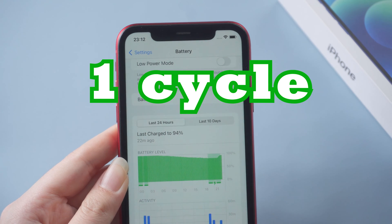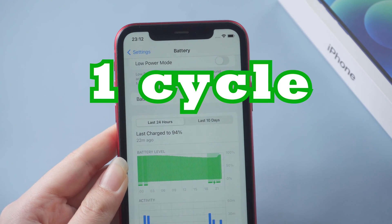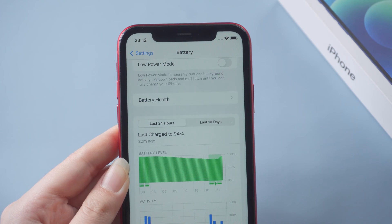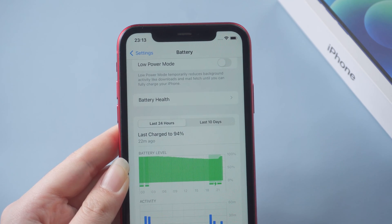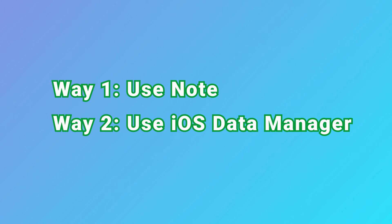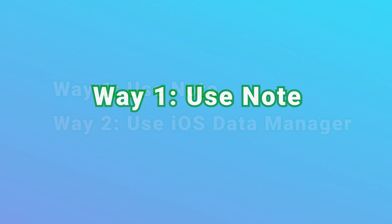This is not an easy task as we cannot directly view the battery cycle count in the settings. After searching online, I found two methods to check the battery cycle count. If you are interested, you can try them. Try the most popular method first.